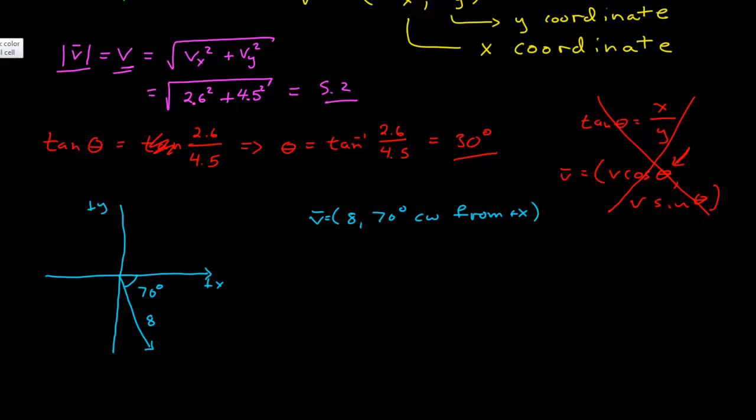Since we always use our vector, it can be written as v is equal to 8, and 70 degrees clockwise from positive x. So using our fundamental rules, we'll draw ourselves a right triangle, and then in this case the x component is here, which is going to be equal to 8 cosine 70 degrees, and the y component is going to be here, and that's 8 sine 70 degrees.